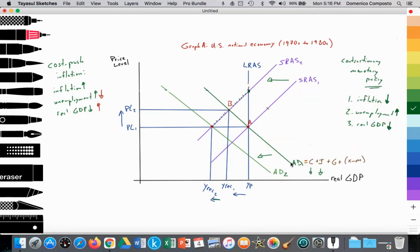So we have a fall in aggregate demand. We're going from point B to point C. Here we are at point C. That was successful and able to reduce the cost-push inflation. The price level falls from PL2 to PL1.